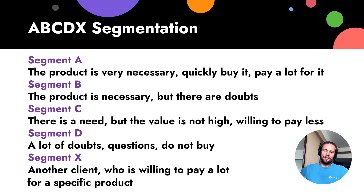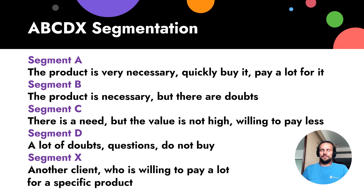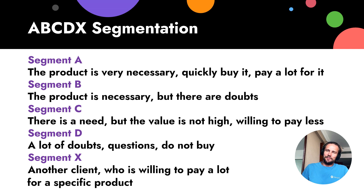Segment B — these are people who buy only if it's necessary. They have some notes, but they also pay regularly.